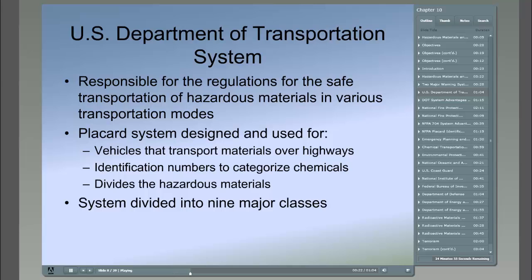This system divides hazardous materials into nine major classifications of hazards, and then into further subdivisions to assist in specific identification of a substance. Class 1 hazards are explosives. Class 2 hazards are gases. Class 3 hazards are flammable liquids or combustible liquids. Class 4 is flammable solids. Class 5 are oxidizers. Class 6 are poisonous materials. Class 7 are radioactive materials. Class 8 are corrosives, and Class 9 are miscellaneous hazardous materials.